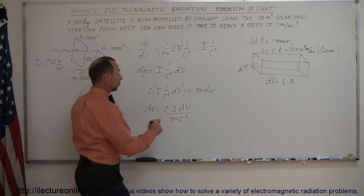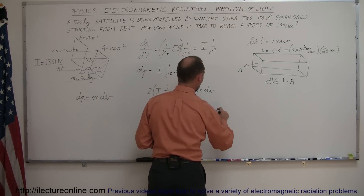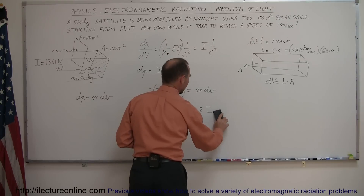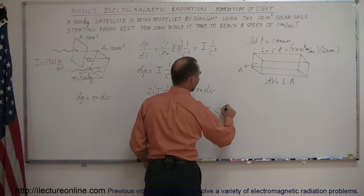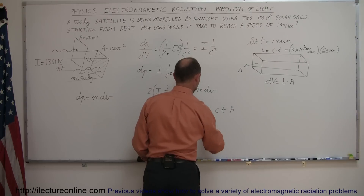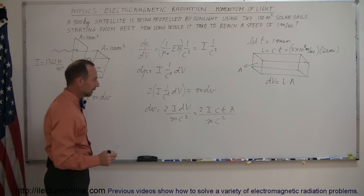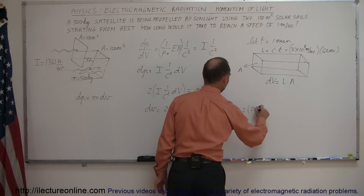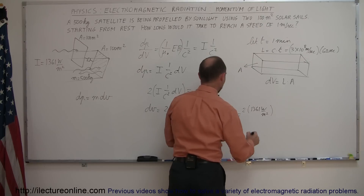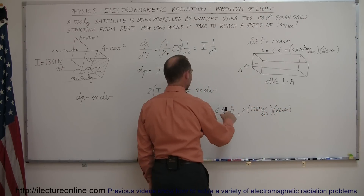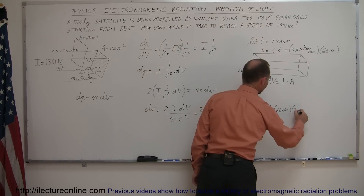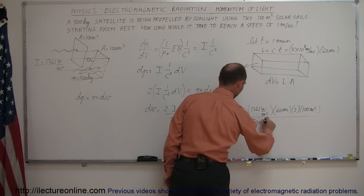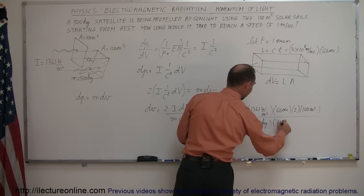Let's plug in everything we know. The change in velocity equals 2I times the volume dV divided by m times c squared. Since dV equals c times the time times the area A, the c's cancel, giving us: dv equals 2 times the intensity times the time times the area, divided by m times c. Plugging in: 2 times 1361 watts per square meter, time of 60 seconds, area of 2 times 100 square meters (two sails), mass of 500 kilograms, and speed of light 3 times 10 to the 8 meters per second.